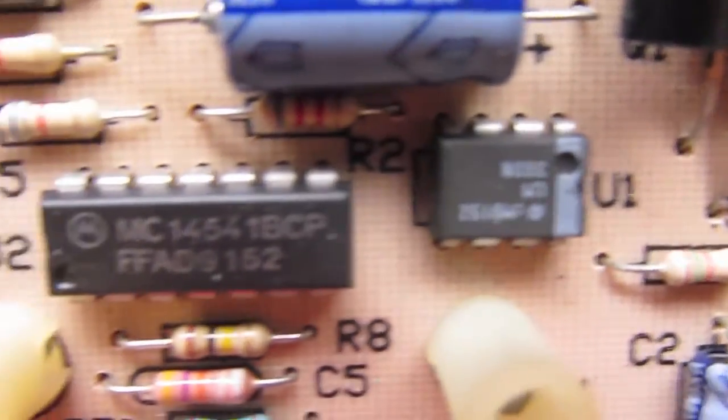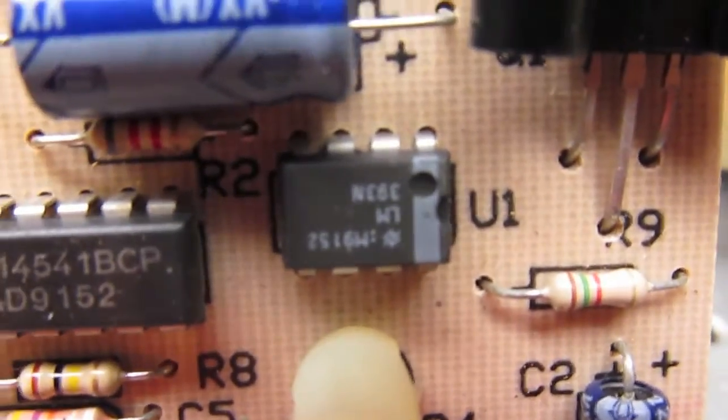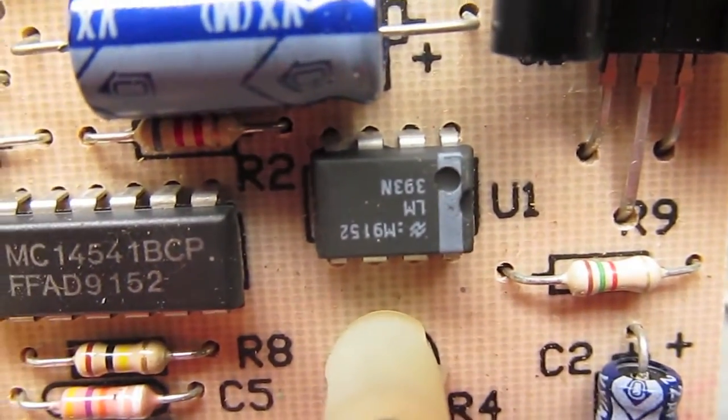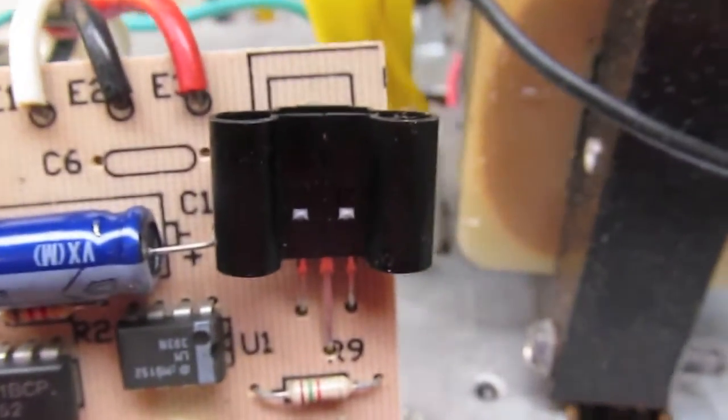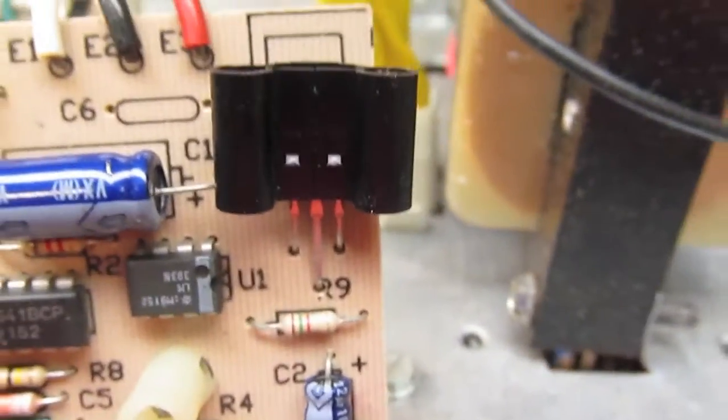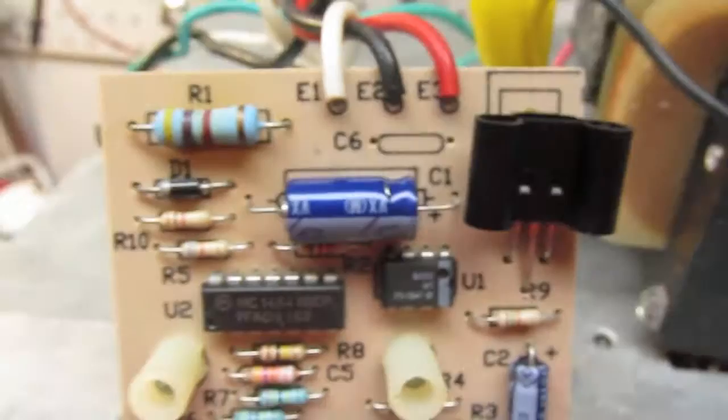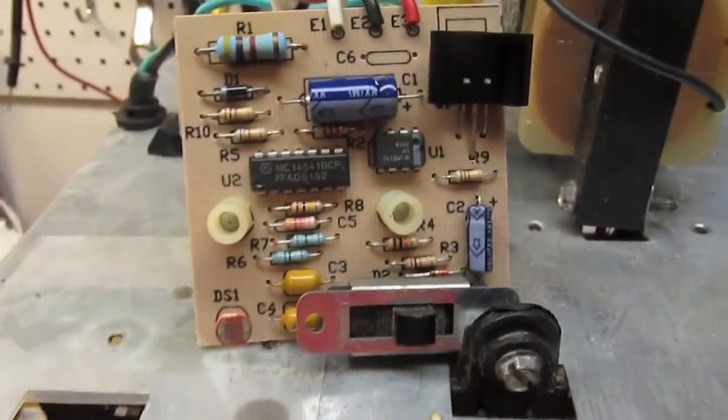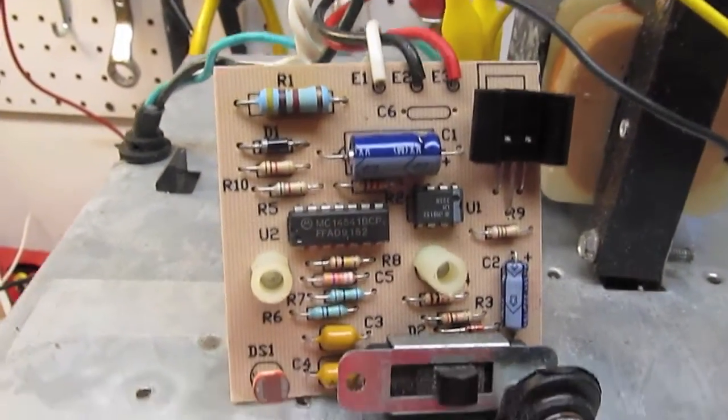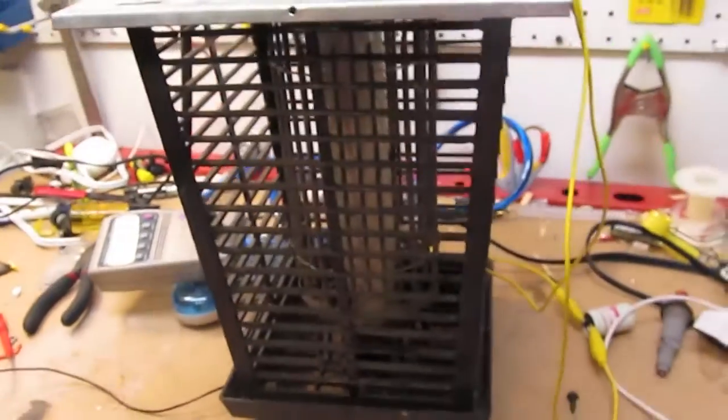Then right next to that chip we have a little LM393N, just a dual comparator. Then over there, probably a triac or something like that to do the switching on and off of the light and the high voltage. So that's all there is to the control board.